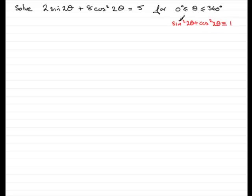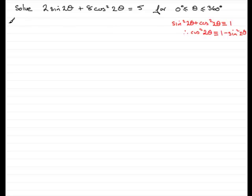So I'm going to use the identity: sin²(angle) + cos²(same angle) ≡ 1. If I rearrange this, I get cos²(2θ) ≡ 1 − sin²(2θ). What I need to do is replace cos²(2θ) with this expression, and then I'll have a trigonometric equation all in the one trig function.